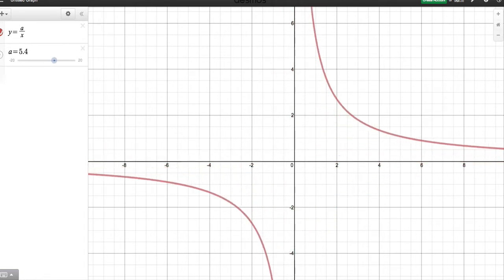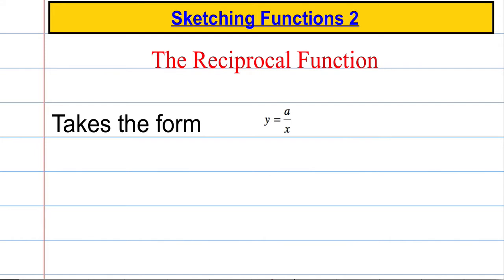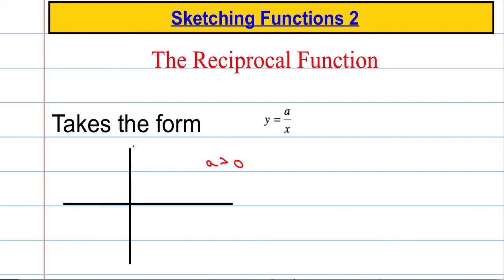So let's just summarise that. When A is positive, so if A is greater than zero, we get a function that curves around in the first quadrant, getting closer and closer to zero but never actually touching it. And we get a mirror image in the third quadrant as well, so it will get closer and closer to the axis but it will never ever touch it. These are what we call asymptotes.